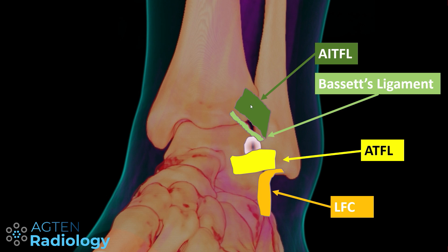The anterior syndesmosis has different portions, and the most inferior portion is sometimes called Bassett's ligament — although it's not really an accessory ligament, it's just a normal portion of the anterior syndesmosis, which is why basically everybody has it. If it's very prominent, people still tend to call it Bassett's ligament. What's important to know is that if you have an ATFL injury with hypertrophic scarring or thickening after an older injury, you can have synovitis there and get this lesion.